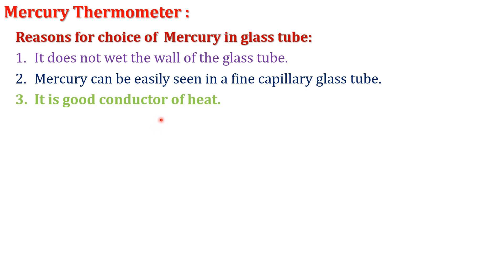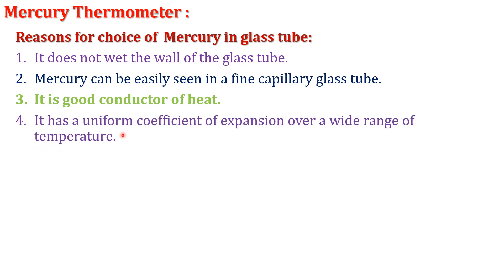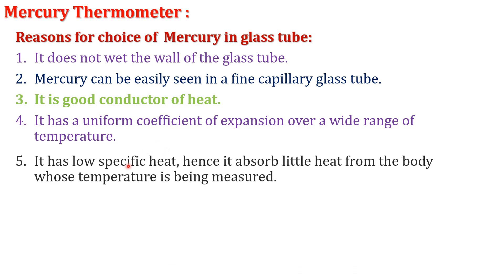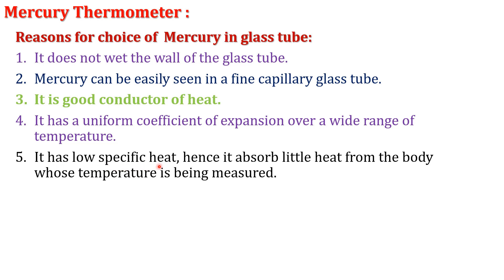Mercury is a good conductor of heat, therefore we can quickly measure temperature using the mercury thermometer. The next reason is that it has a uniform coefficient of expansion over a wide range of temperature — that temperature range is between its freezing point and boiling point.